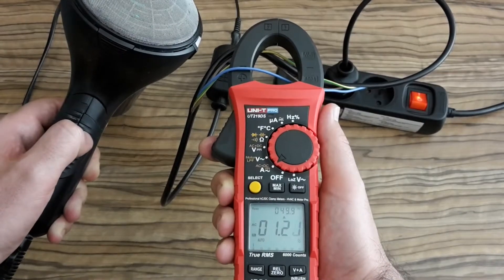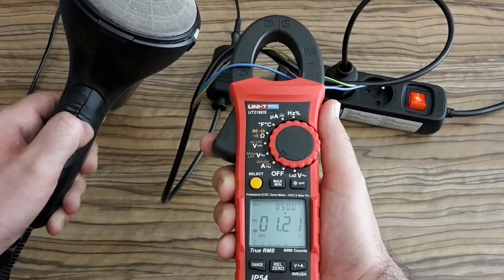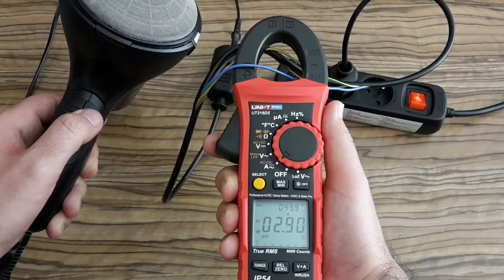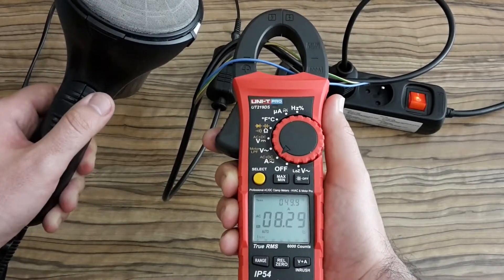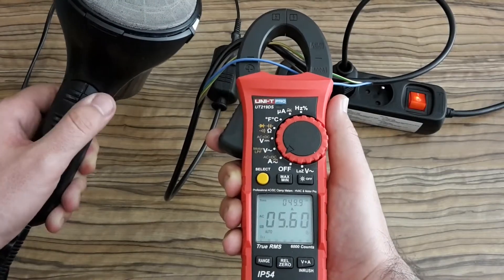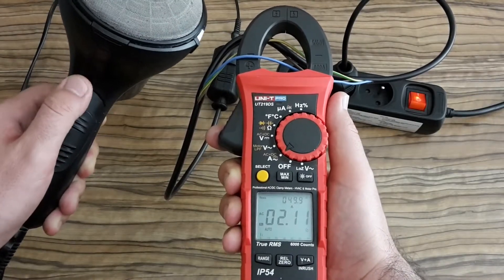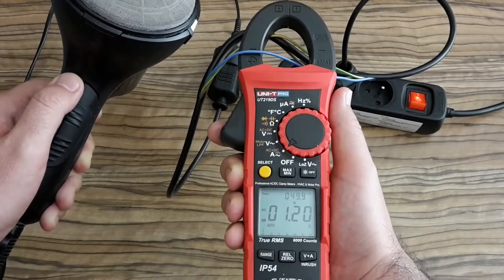There are several modes on my hair dryer. So you can see how much current each draws. The maximum is 8 amps. So now I understand why hair dryers are so dangerous.